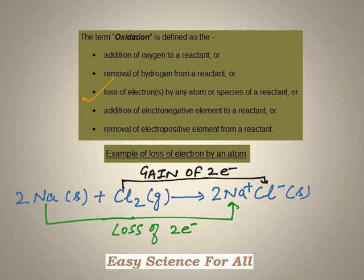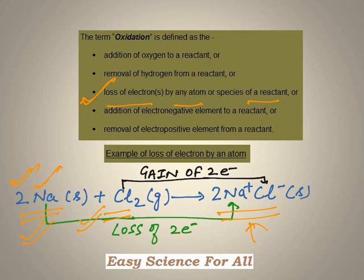Let us now discuss the third criteria of oxidation — that is, loss of electron by an atom of a reactant. As you can see in this reaction, there are two reactants, namely sodium and chlorine. Sodium is a metal, whereas chlorine is a non-metal. When they react with each other, it results in the formation of an ionic compound, namely sodium chloride. During this reaction, two atoms of sodium metal are losing two electrons, and these two electrons are being gained by two atoms of chlorine. So going by this third criteria, since sodium metal has lost electrons in this reaction, sodium has been oxidized, or oxidation of sodium atom has taken place in this reaction.